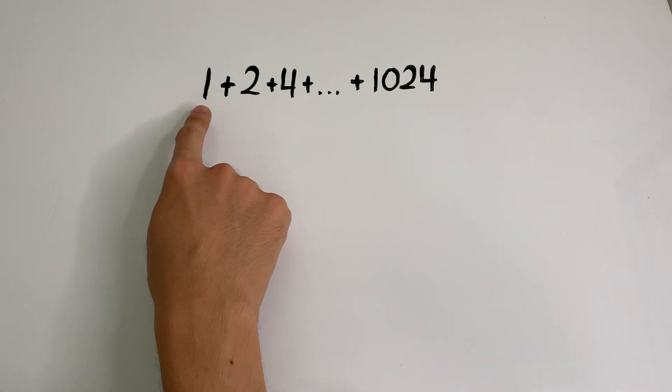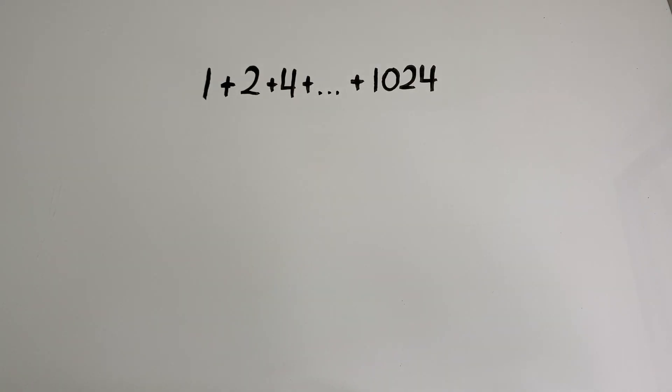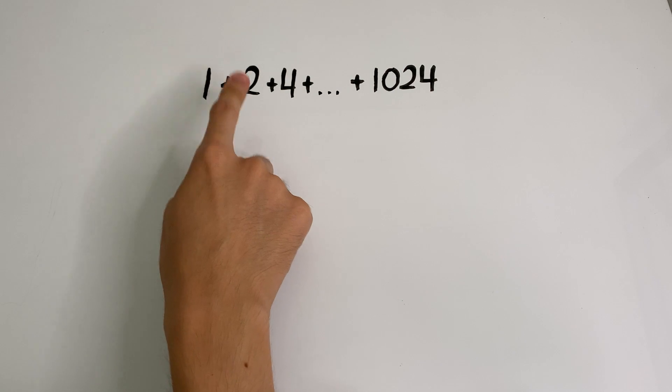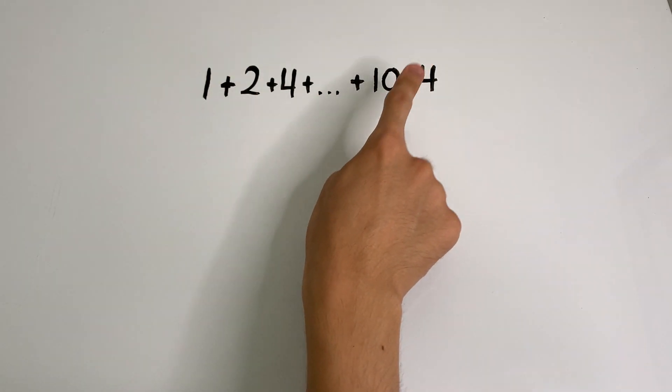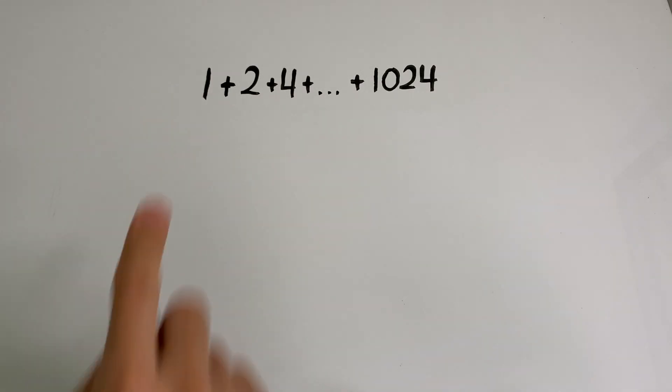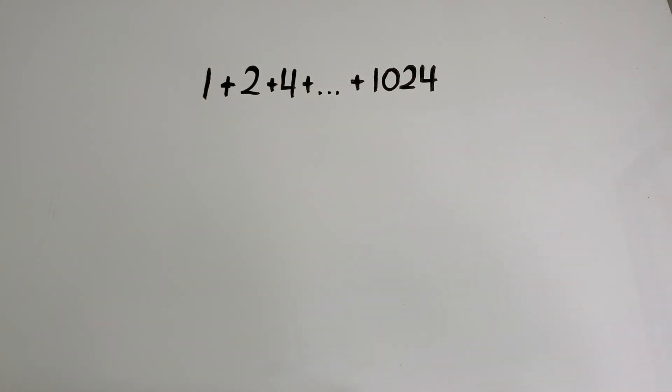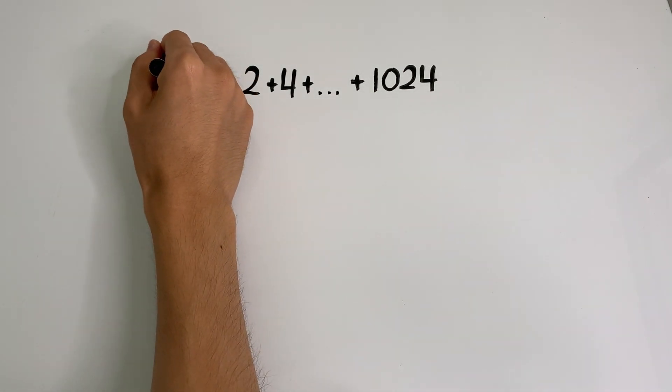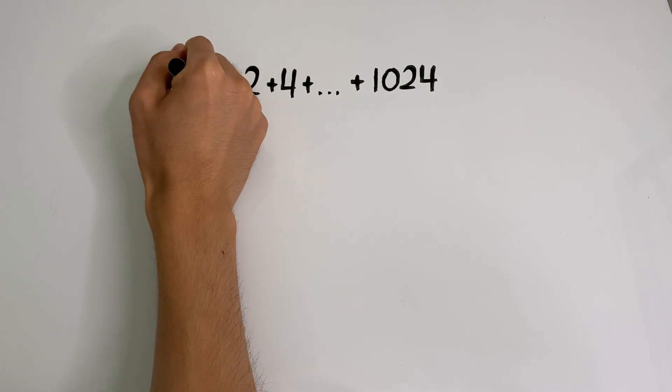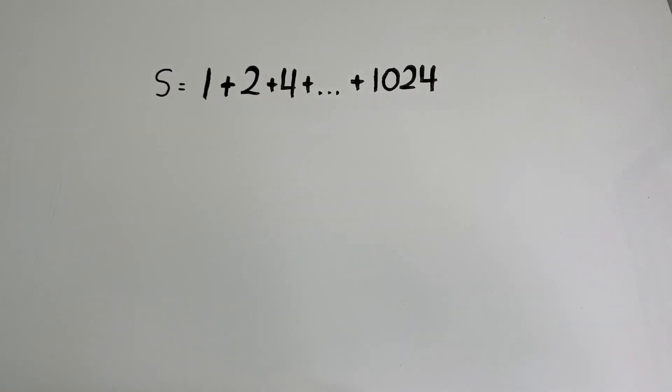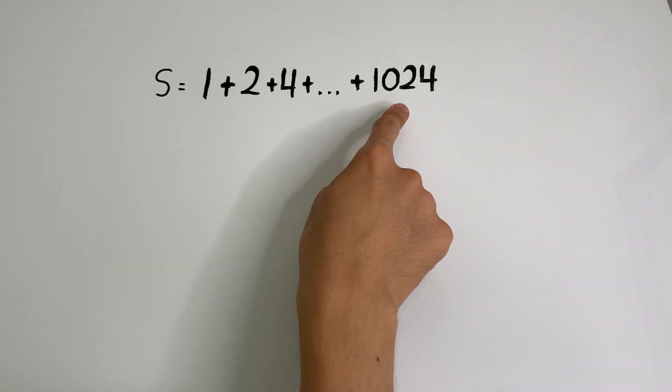So over here, we have a geometric series that goes 1 plus 2 plus 4 all the way to plus 1024, where we are multiplying by 2 each time to get to the next term. So to find this sum, we're going to start off by calling the whole thing S. So from now on, whenever I say S, I am really referring to all of this over here.